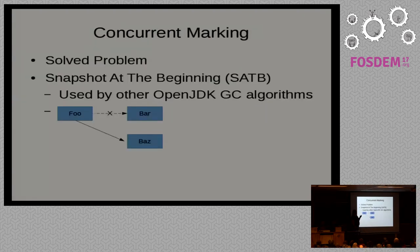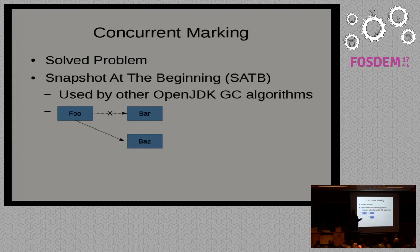The concurrent marking part is a solved problem. CMS, G1, and Shenandoah all use basically the same snapshot-at-the-beginning algorithm. All that means is that if you update a pointer — it used to point to bar and now it points to baz — and you're in the middle of a concurrent marking cycle, you have to be sure that bar stays alive, because it was alive at the beginning of concurrent marking. So it's just a barrier that adds bar to the things to be marked.